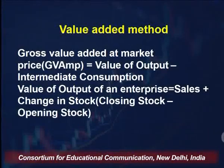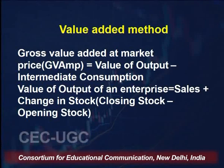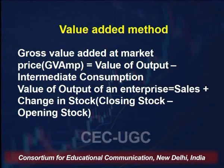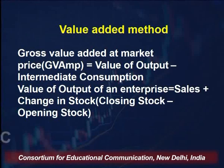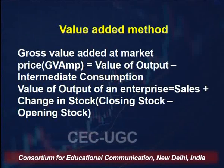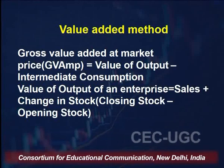This method is used to measure national income in different phases of production in the circular flow. Gross Value Added at market price (GVA MP) equals value of output minus intermediate consumption, where value of output of an enterprise equals sales plus change in stock, that is closing stock minus opening stock.